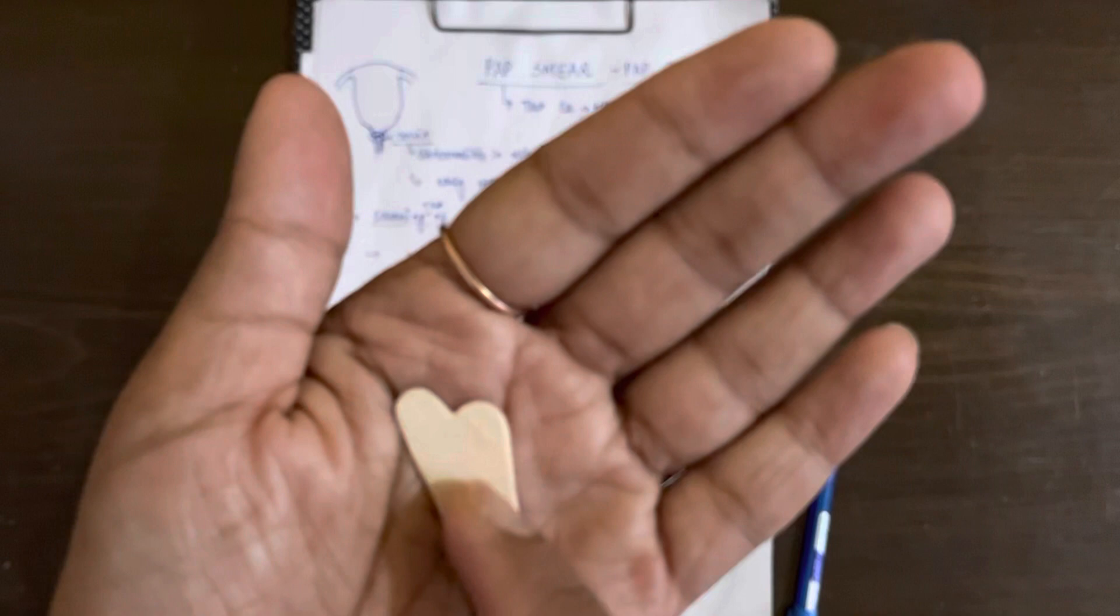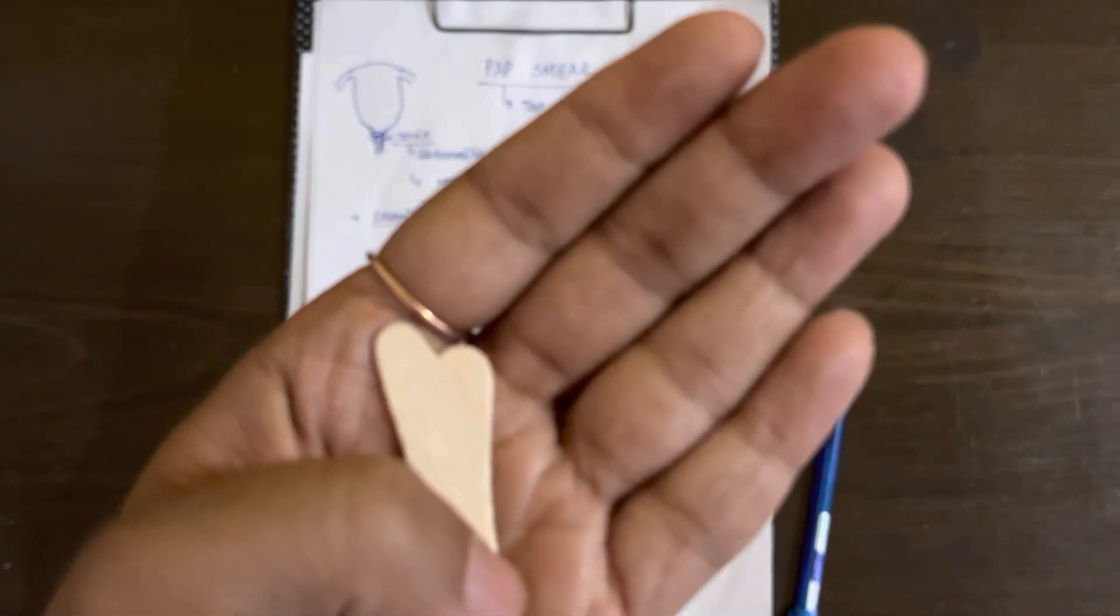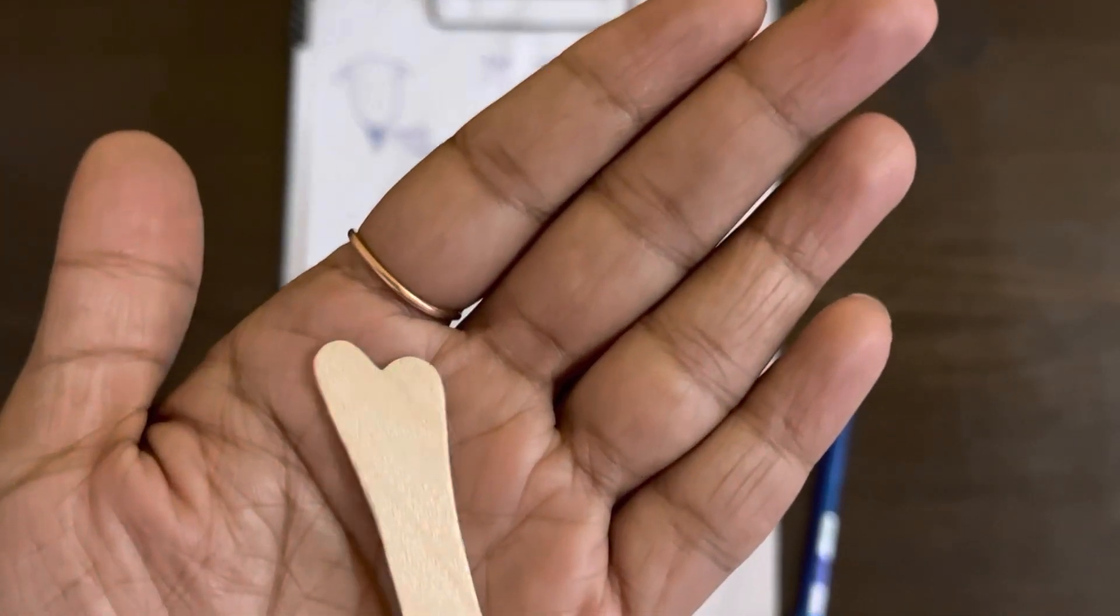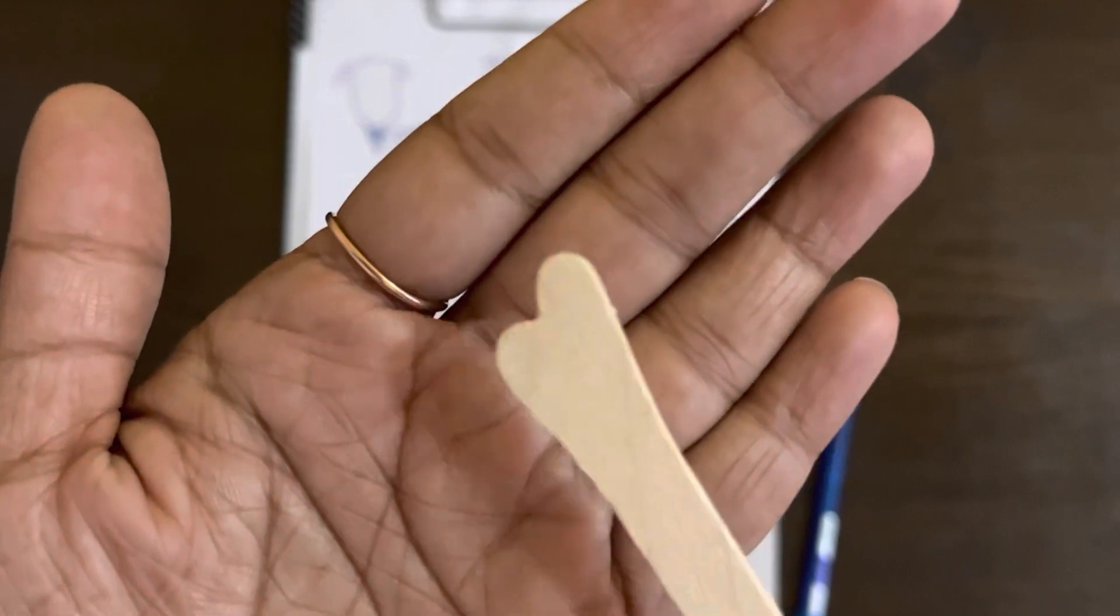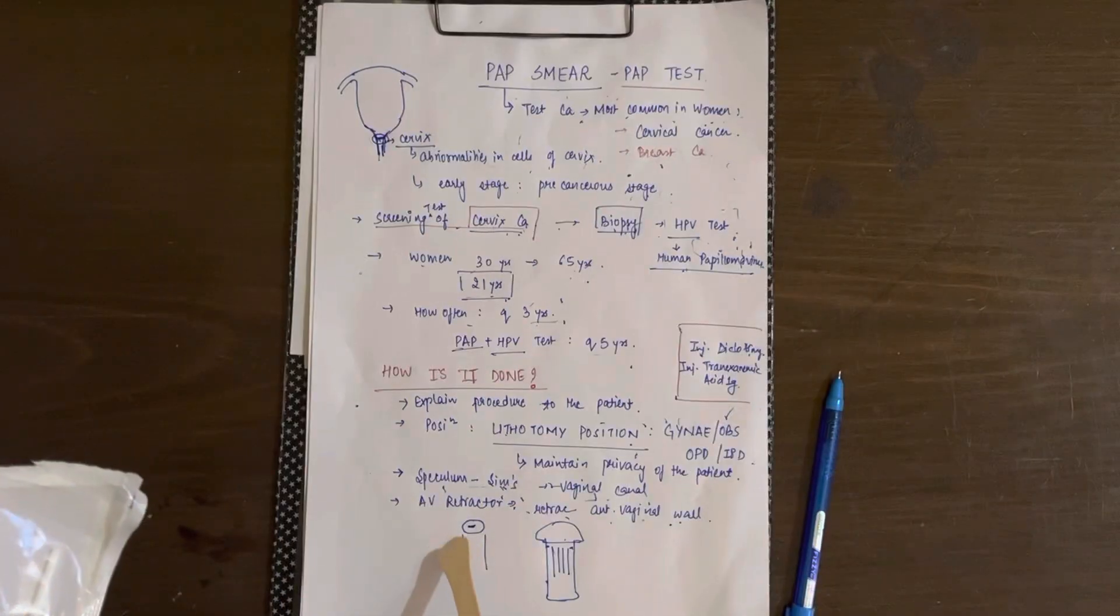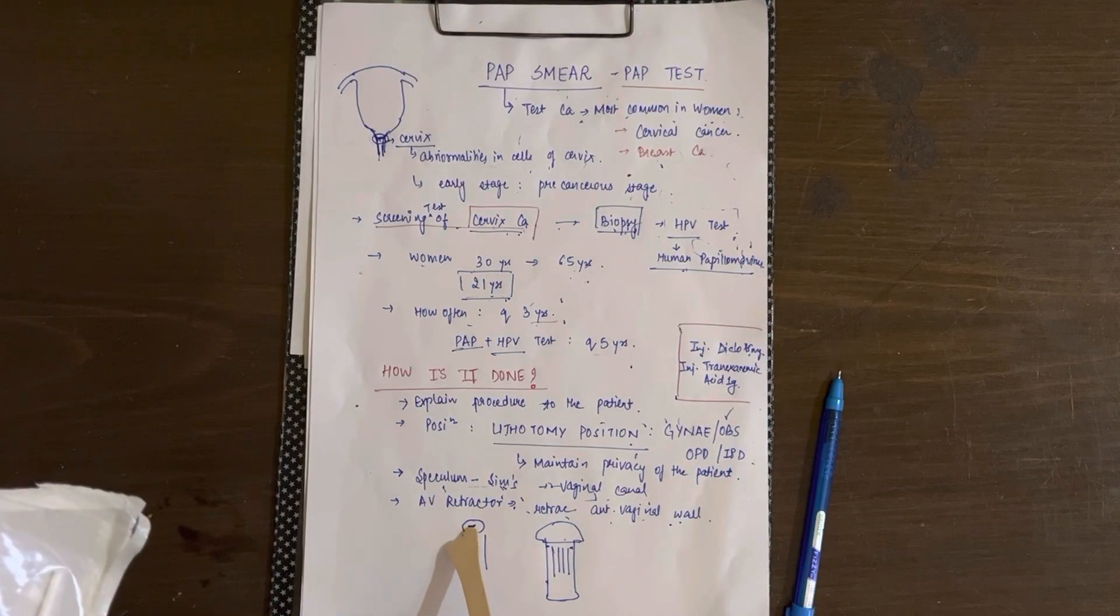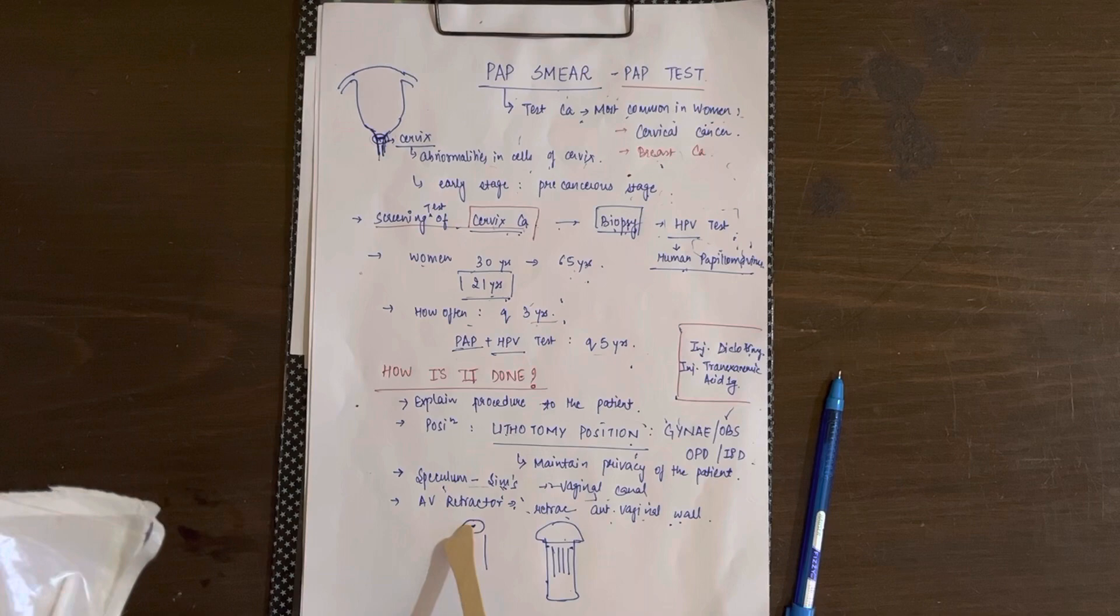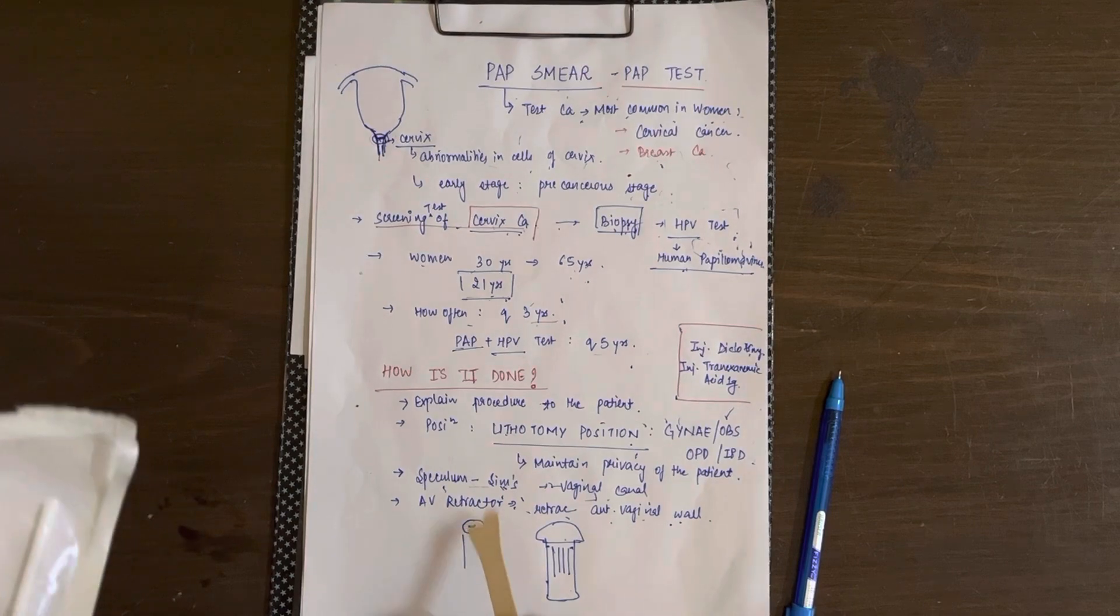See, this is the IRS spatula that we're going to use to take the cervical cells from the external os of the cervix. If you imagine this to be the os of the cervix, you put it near the mouth of the os and take the sample from here.